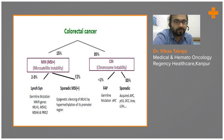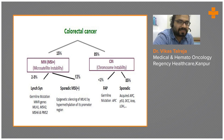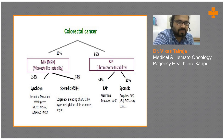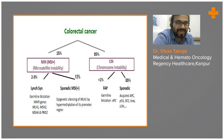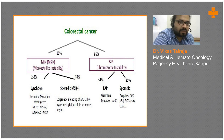Among colorectal carcinomas, 15 percent are microsatellite instable (MSI) and 85 percent are chromosomally instable. The MSI subtype has a hereditary association known as Lynch syndrome, where two to three percent carry a germline mutation in the mismatch repair (MMR) genes. The MMR gene complex consists of four main genes: MLH1, MSH2, MSH6, and PMS2.